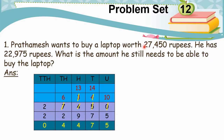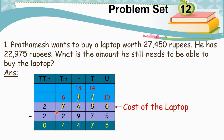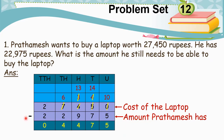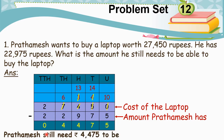The answers to these questions will help us form the statements for the solution. We write the statement as: cost of the laptop = 27,450 rupees; amount Prathamesh has = 22,975 rupees. Now, let us subtract the amount Prathamesh has from the cost of the laptop to get the answer. Thus, Prathamesh still needs Rs. 4,475 to be able to buy the laptop.